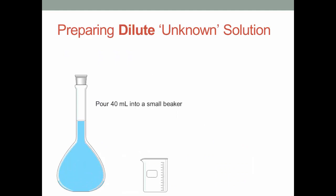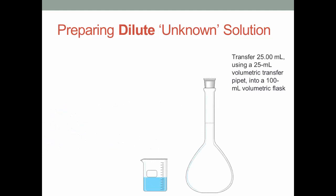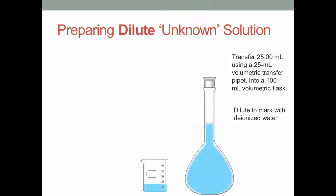Next, we will prepare a dilute unknown solution from our dissolved multivitamin. Pour 40 ml of the multivitamin solution into a small beaker. Then, transfer 25 ml using a 25 ml volumetric transfer pipette into a 100 ml volumetric flask. Dilute to the mark with deionized water, and remember to mix well.